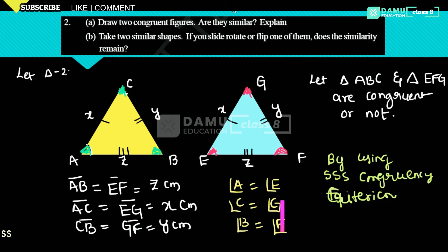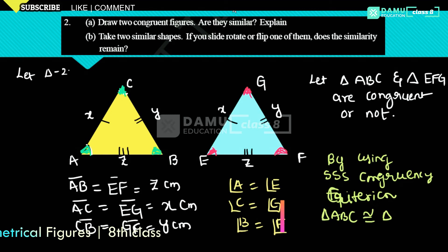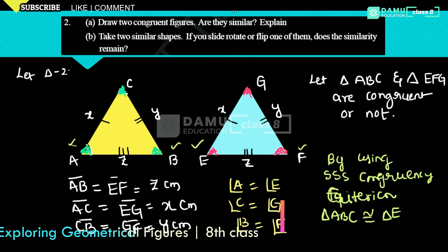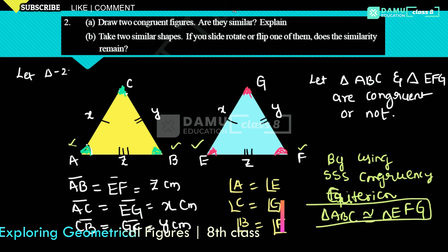By SSS congruency, triangle ABC is congruent to triangle EFG — where A corresponds to E, B corresponds to F, and C corresponds to G. You can write it in that order.